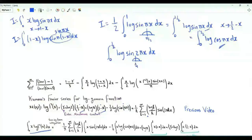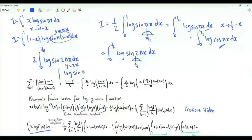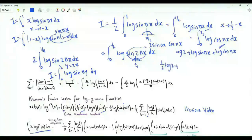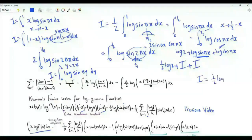Consider the integral from x=0 to 1/2 of log sin(2πx), evaluated in two ways. The integrand is symmetric about 1/4, so this equals 2 times the integral from 0 to 1/4 of log sin(2πx). With the substitution y=2x, this becomes I. Alternatively, since sin(2πx) = 2·sin(πx)·cos(πx), we have log sin(2πx) = log 2 + log sin(πx) + log cos(πx). Integrating gives (1/2)log 2 + I + I = (1/2)log 2 + 2I. So I = (1/2)log 2 + 2I, giving I = minus log 2 / 2.